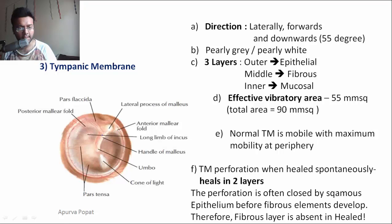The structures you can see through the tympanic membrane include: the handle of malleus, the lateral process of the malleus, the notch of Rivinus, and the malleolar folds — the anterior and the posterior malleolar folds — which attach from the notch of Rivinus to the handle of malleus.